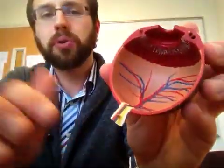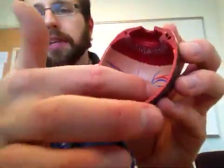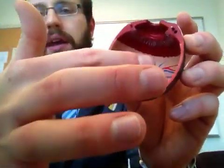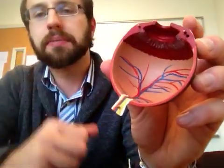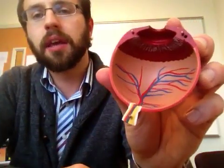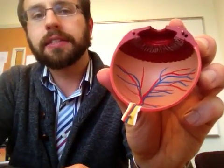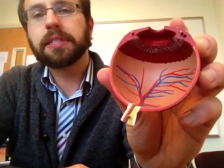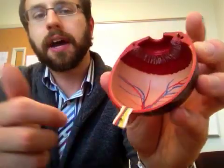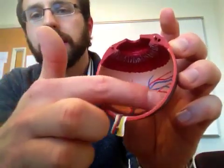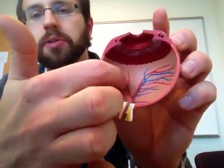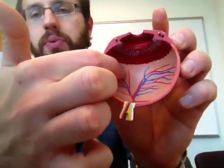There is a large posterior cavity sitting back here now. This open space is lined by the deepest layer of the eye, which is the retina. All of this peach-colored lining in here is the retina.